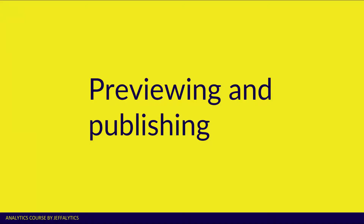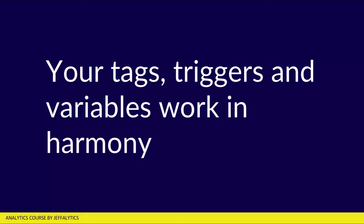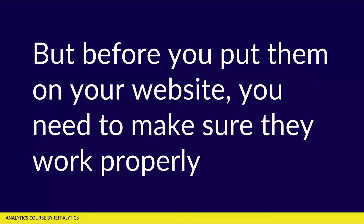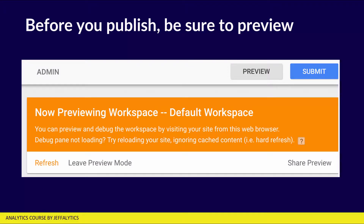In Google Tag Manager, once you have your tags in place, you want to preview and publish your tags. Your tags, triggers, and variables all work in harmony together — it's like a perfect triangle of things that you need. You need a tag because that's what the vendors want. You need a trigger, which sets up the rules for when that tag should fire. And finally, you need variables to make these things dynamic so you don't have 8,000 tags in your site whenever you want to track something new. But before you put them on your website, you need to make sure they're working properly — so before you publish, be sure to preview.